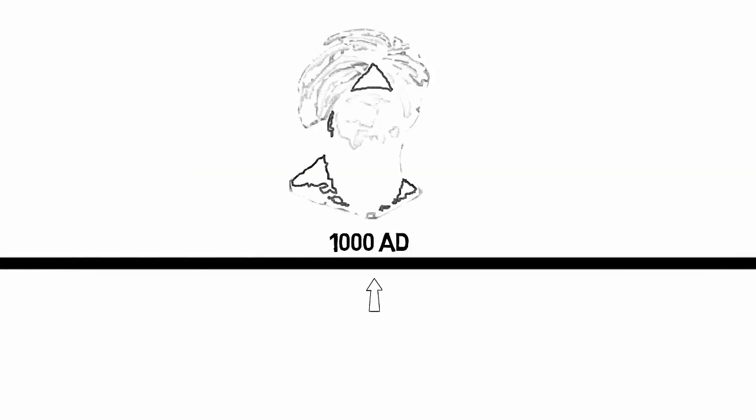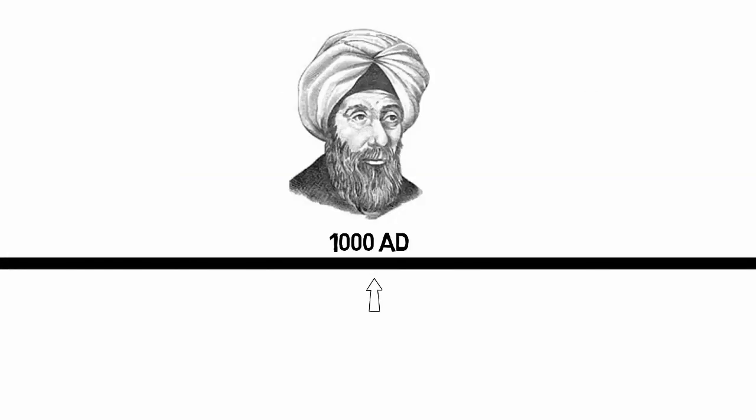Around 1000 AD, an Arab scientist named Ibn al-Haytham proved that light is a natural agent which stimulates sight and makes things visible.